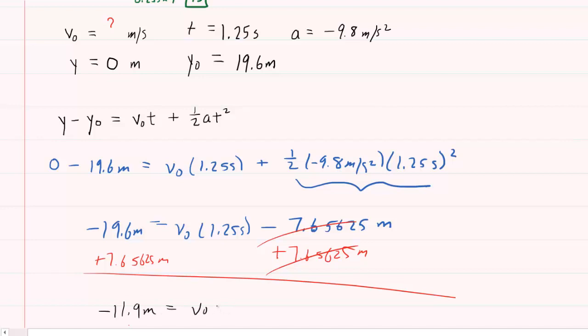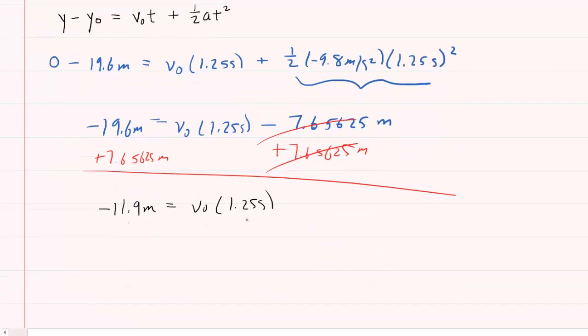And then finally, to solve for the initial velocity for Apple II, you'll divide both sides of the equation by 1.25 seconds. And when you do that, you will get an initial velocity of approximately negative 9.6 meters per second.